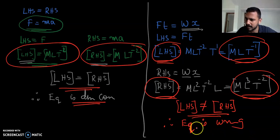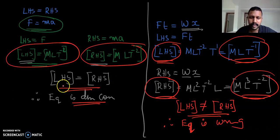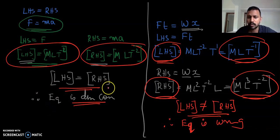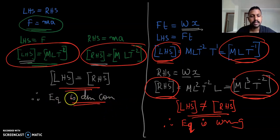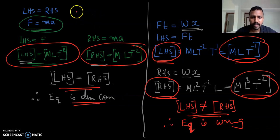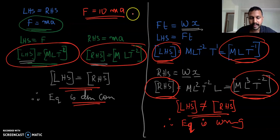Did I say dimensionally wrong? No — if the dimensions are unequal, it is actually wrong. But if the dimension formula of LHS equals that of RHS, did I conclude the equation is correct? No, I concluded only that the equation is dimensionally correct. Why? Because if this equation is replaced by F equals 10 MA, that is not the equation for force — F equals MA is the correct equation.